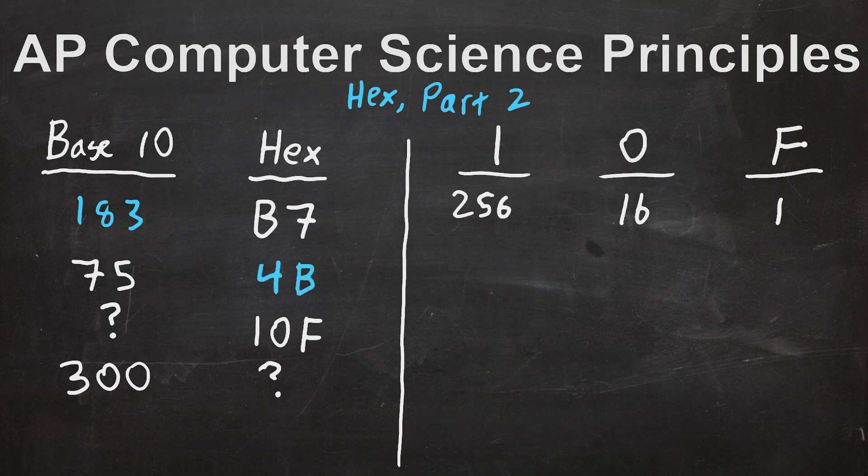Onward to the third problem, and once again, it's very important that you remember that this represents two separate places. So we are trying to decode the number and put it into base 10. Well, we have 1 in the 256 place, and we have 0 in the 16 place. And we have an F in the ones place, and F stands for 15.